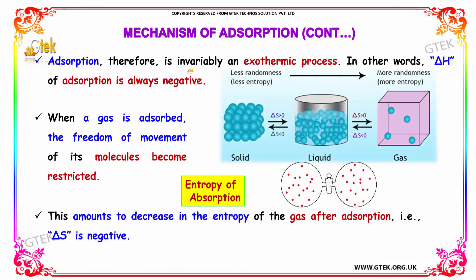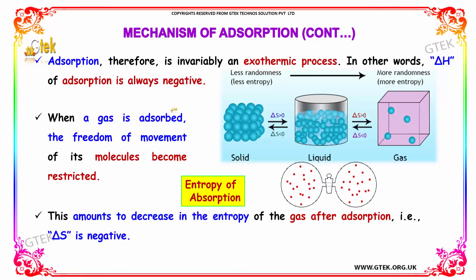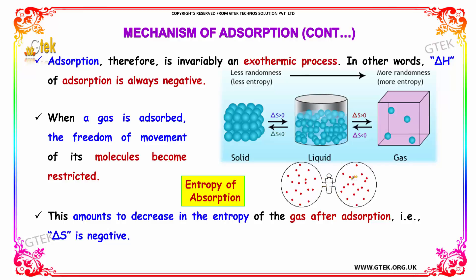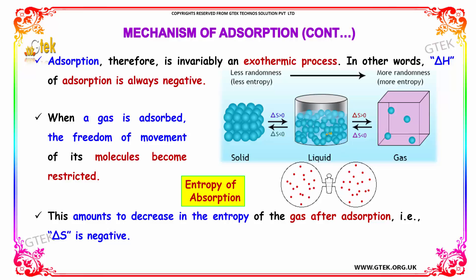Adsorption, therefore, is invariably an exothermic process. In other words, the delta H of adsorption is always negative. When a gas is adsorbed, the freedom of movement of its particles becomes restricted. This decrease in the entropy of the gas after adsorption means delta S is negative.